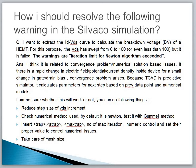Let's go to the third error you are mostly facing during simulation of Silvaco TCAD code: how to resolve the following warning — "iteration limit for Newton algorithm exceeded." This comes from a query from one of my followers who wants to extract the ID-VDS curve to calculate the breakdown voltage of a HEMT structure. The VDS was swept from 0 to 100 or even less than 100, but it failed with this warning. The answer is that I think it is related to the convergence problem — a numerical solution based issue. If there is a rapid change in the electric field, potential, or current density inside the device for a small change in gate voltage or drain voltage, the convergence problem arises.